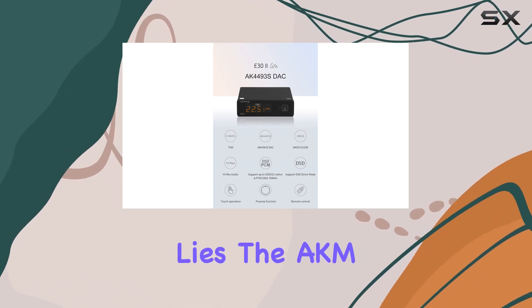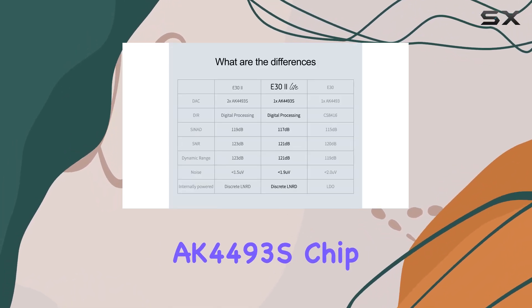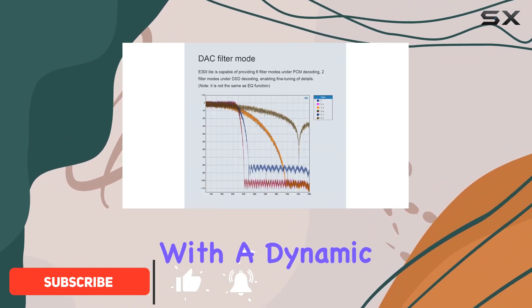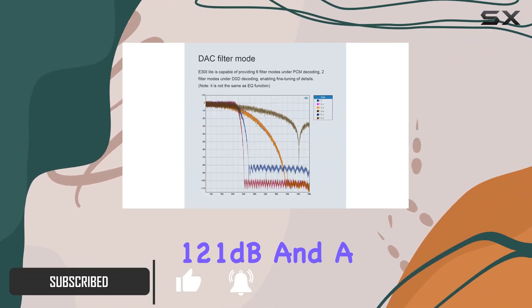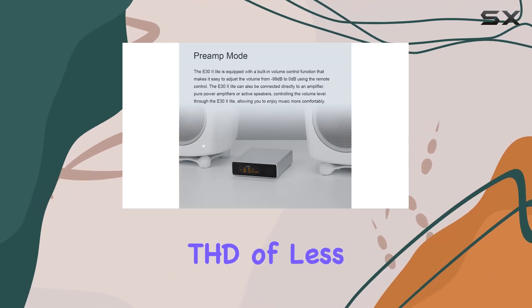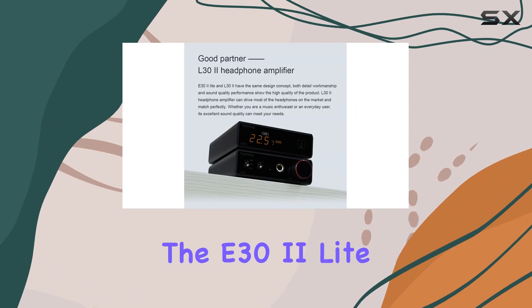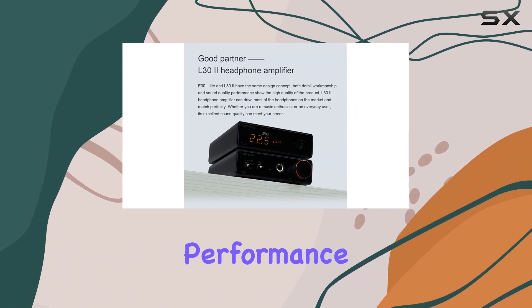At its core lies the AKM AK4493S chip, renowned for its exceptional sound quality. With a dynamic range reaching 121 dB and a barely perceptible THD of less than 0.0004%, the E32 Lite boasts professional-grade performance that sets it apart.